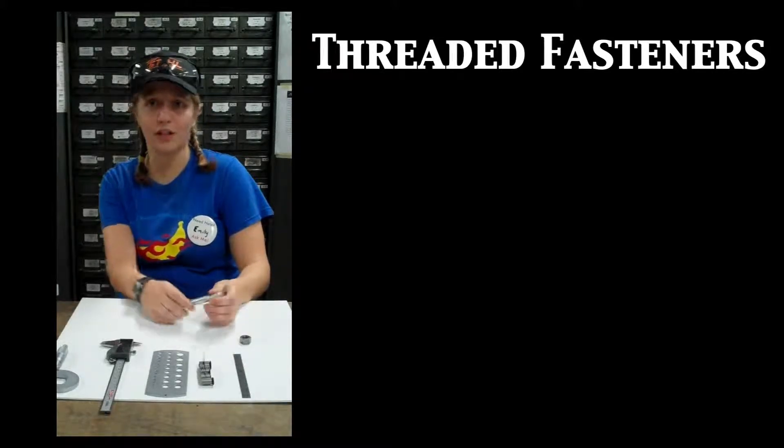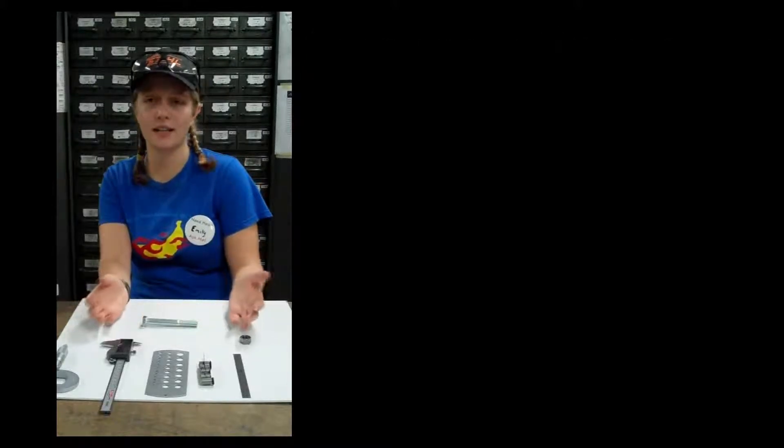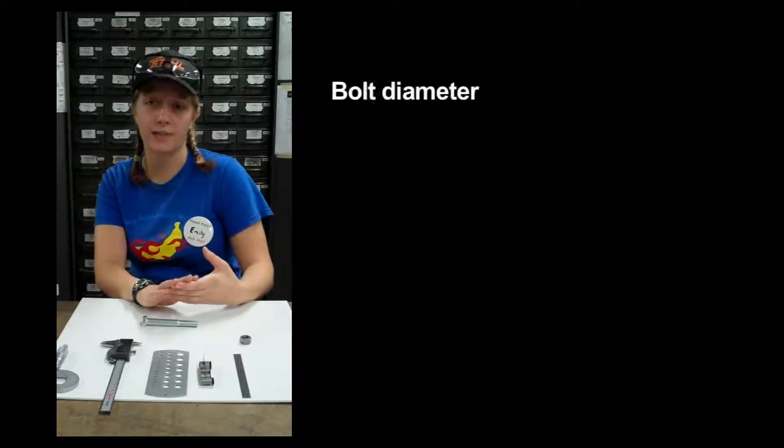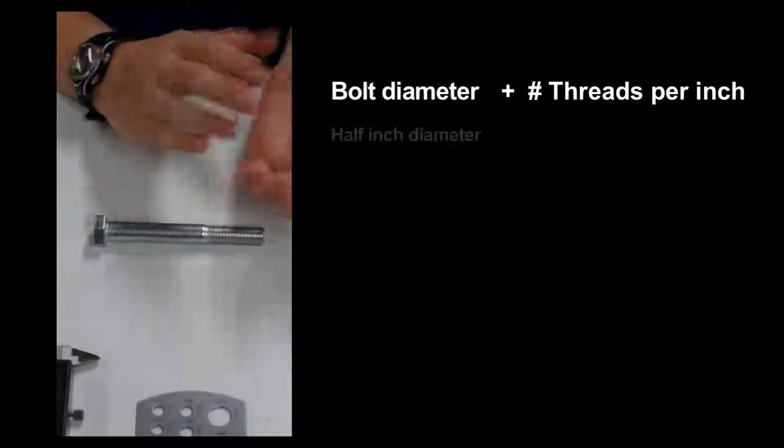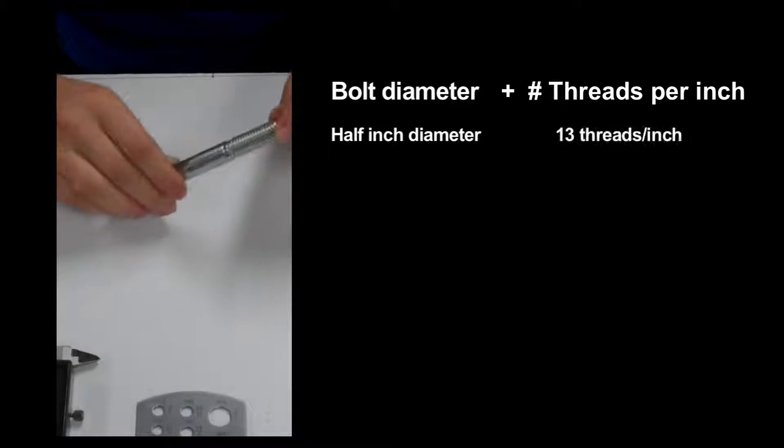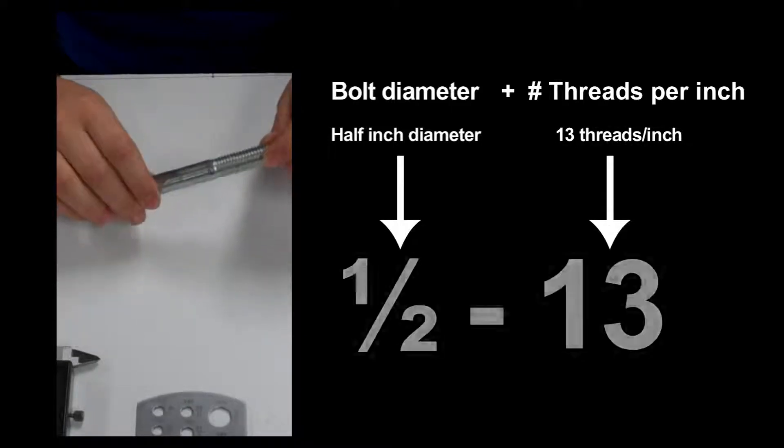First, the terminology. In the United States, the convention for describing threads is to give the bolt diameter followed by the number of threads per inch. So a bolt with a half inch diameter and 13 threads per inch is called out as 1 half 13.